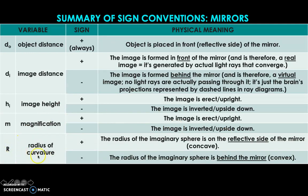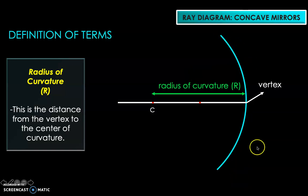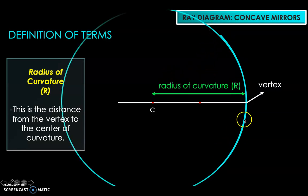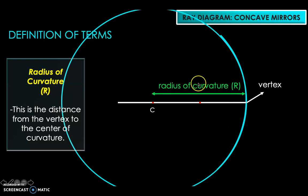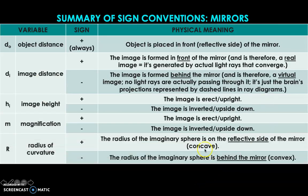Next, we have the radius of curvature, or capital R. It is positive whenever the radius of the imaginary sphere is on the reflective side of the mirror — in other terms, whenever you have a concave mirror, the radius of curvature is positive. It is negative whenever the radius of the imaginary sphere is behind the mirror, which is the case for a convex mirror. For a concave mirror, if you extend it into a full sphere, the radius would be on the reflective side, which is why the radius of curvature given in the problem takes a positive sign.